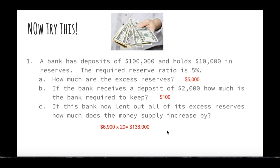You really have to be careful when answering these kinds of questions on your test. If it's asking the initial increase in the money supply, they're just talking about loaning out the initial $1,900 from those excess reserves. If it's talking about the total increase in the money supply, then they want you to multiply it by the multiplier. On the back of the practice I gave you in class on T-accounts, there are a couple of questions relating to the money multiplier — please check those out and let me know if you have any questions.